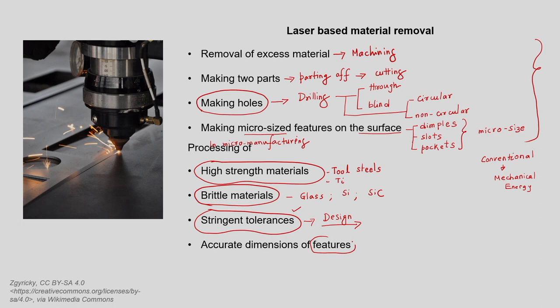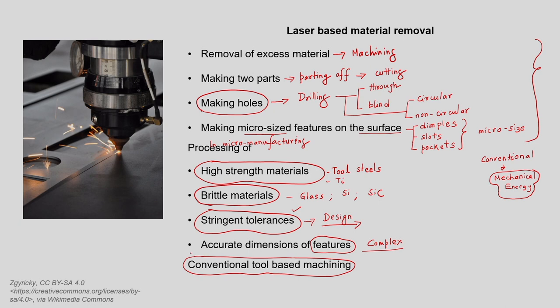Moreover, there are many complicated features to be generated on the surface — complex features are to be manufactured. When we talk about generation of complex features with stringent tolerances on brittle materials or high-strength materials, the mechanical energy or tool-based manufacturing processes are not sufficient. We find it difficult to satisfy all these requirements using mechanical energy. So conventional tool-based machining processes have severe limitations for these requirements.